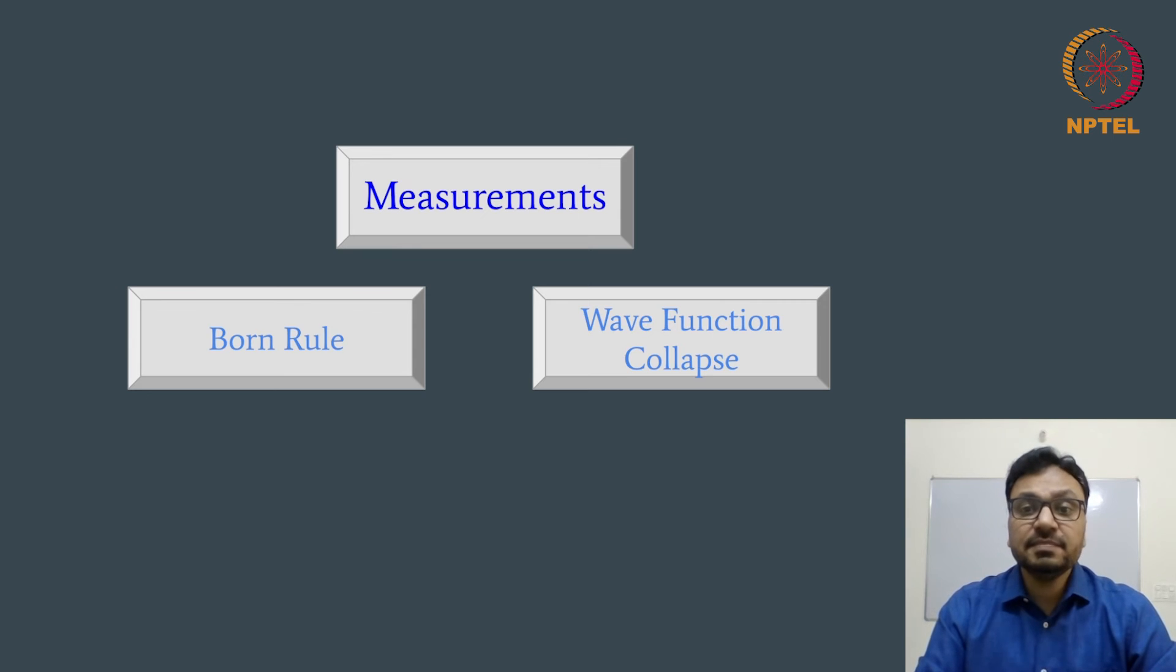And finally, we discuss the measurement postulate of quantum mechanics. Measurement postulate states the rule for the probability of an outcome, it is called the Born rule of probability, in a quantum measurement depending on the state of the system and the observable being measured. Further, it dictates how the state of a quantum system is modified due to the process of measurement and it is called the wave function collapse.